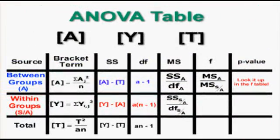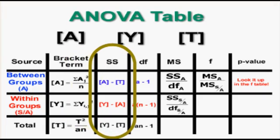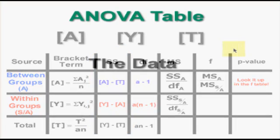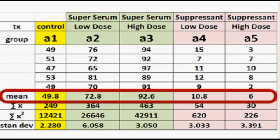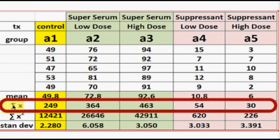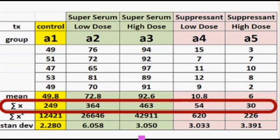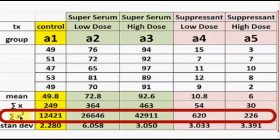To begin, we'll be calculating the sum of squares. You'll need to work with bracket terms. Bracket terms are just a theoretical way to calculate something — mathematically, they don't mean anything on their own. First, before you get to the source table, calculate the column statistics. For each group, you'll need to calculate the mean of that group, the sum of all the numbers in that group, the sum of the numbers squared, and the standard deviation.